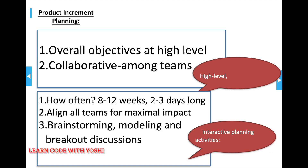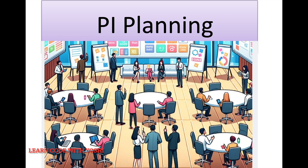Basically, this is a collaborative meeting to determine the upcoming work scope and outcomes. Earlier I talked about sprint planning — sprint planning is within the team, but PI planning is among all teams for maximal impact. The teams involved engage in all kinds of interactive planning activities like brainstorming, modeling, and breakout sessions to determine how work will get done in the PI.